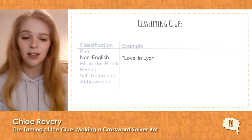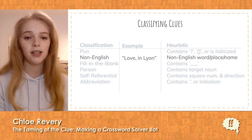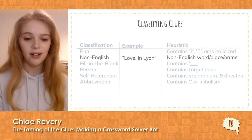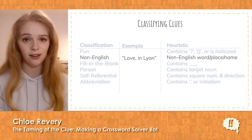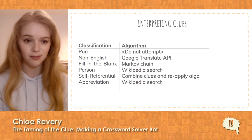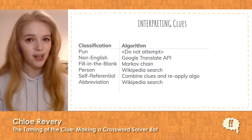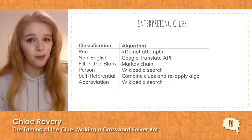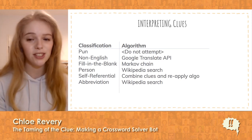For example, if we see the clue "love in Lyon," we can classify it as non-English because it contains a non-English word, place, or name. Now that we have this in place, we can use a different API or strategy to generate the answers. Here's a sample of some of the approaches I used. You're probably wondering what's up with puns. It turns out computers are good at math, but not so good at humor. I'm several PhDs short of figuring out how to solve this problem, so I just skipped over it.